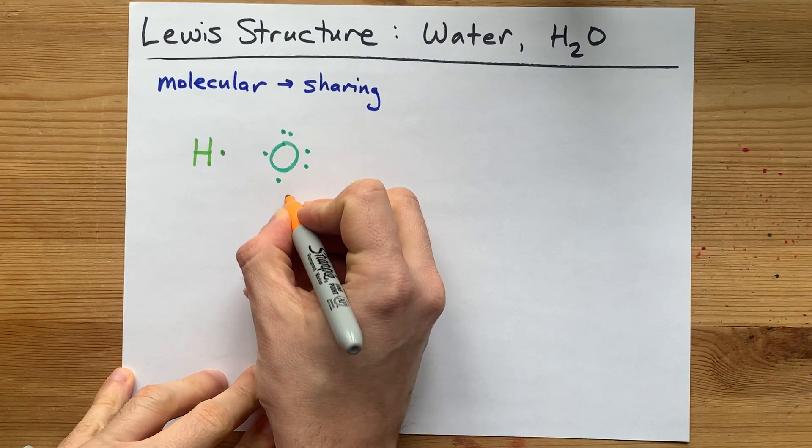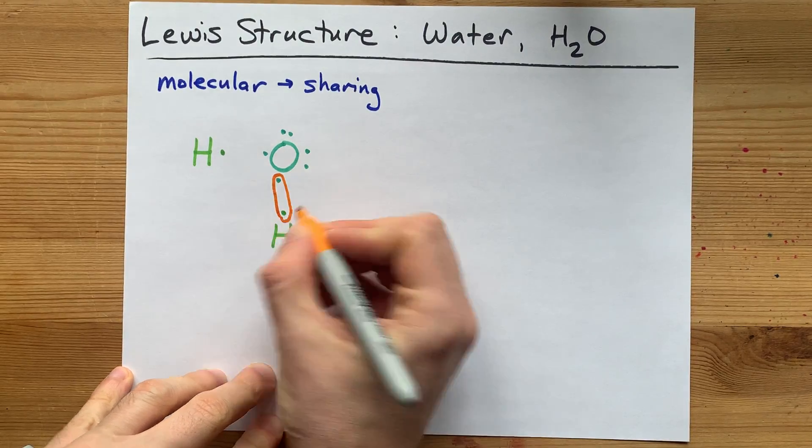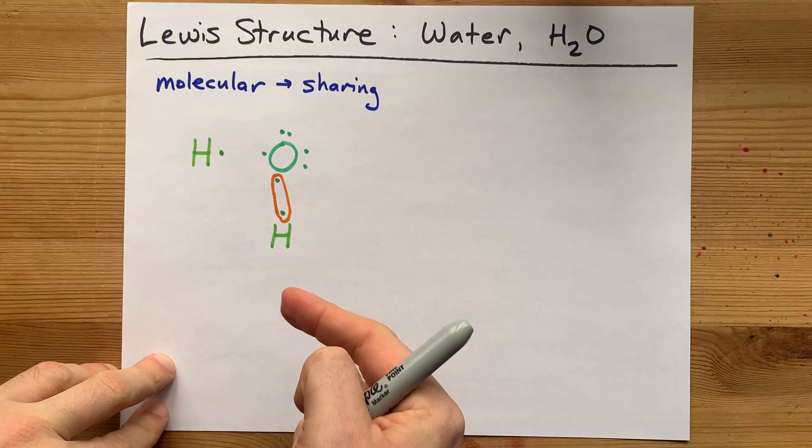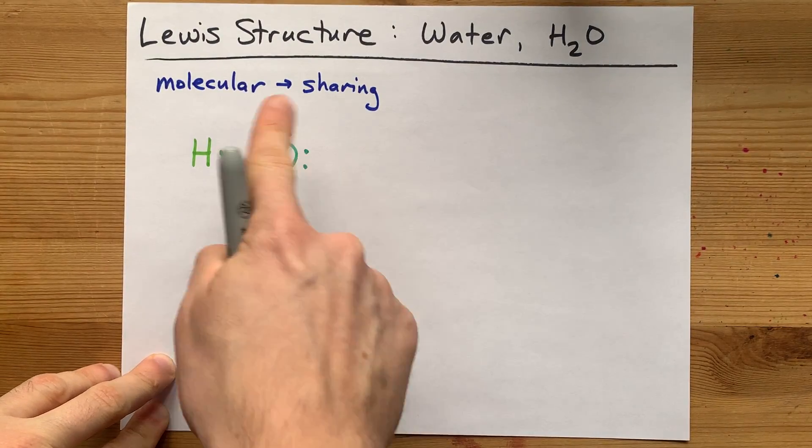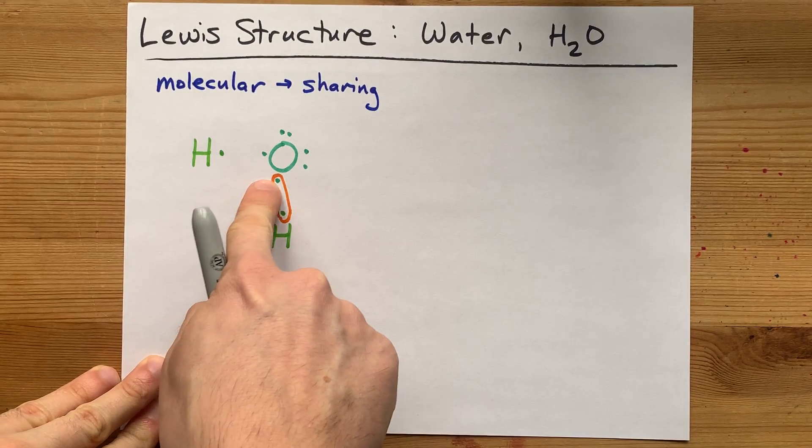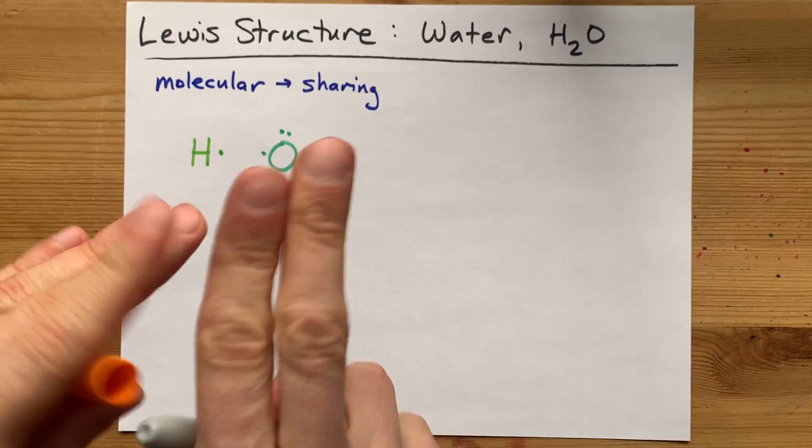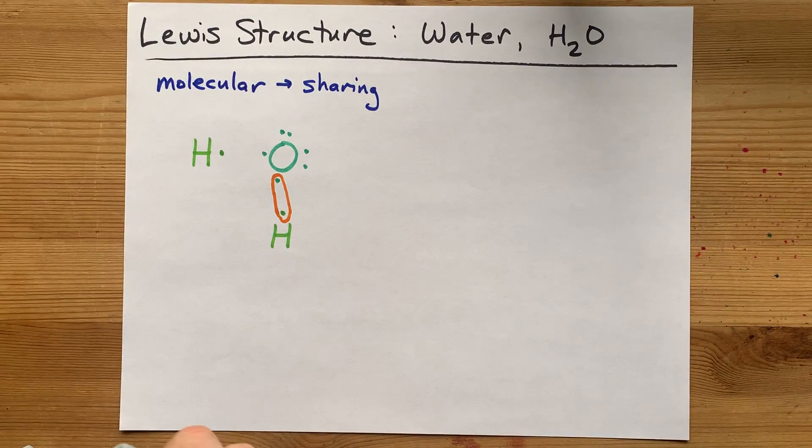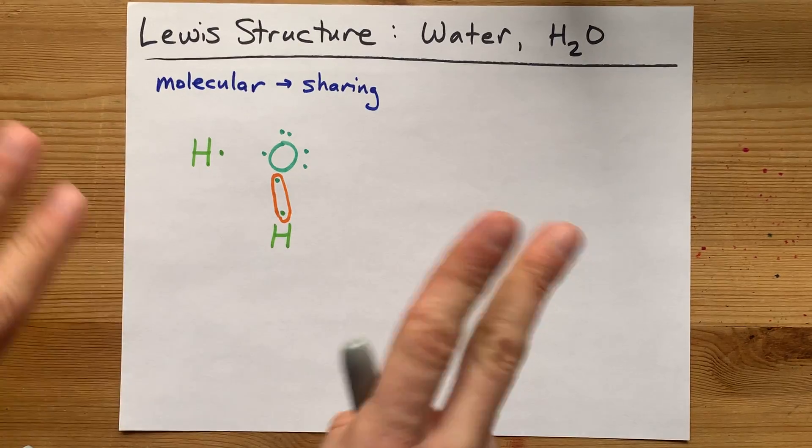This unpaired electron will combine, they're going to pair up with the other unpaired electron. That now gives oxygen a seventh. And this hydrogen gets its second. Now, hydrogen doesn't follow the octet rule. It's happy with just two electrons. It's called the doublet rule, but whatever.